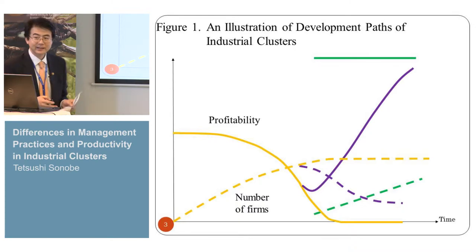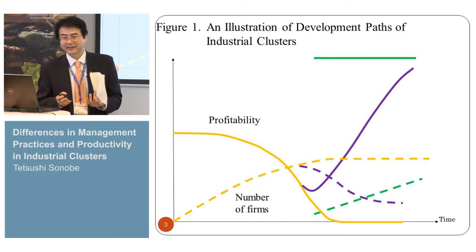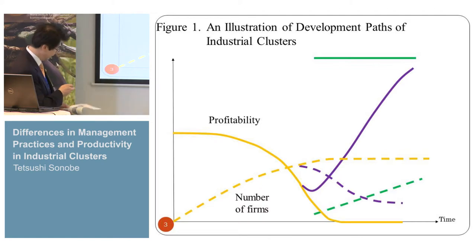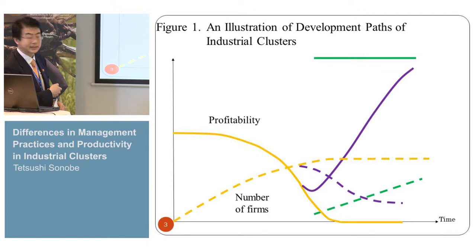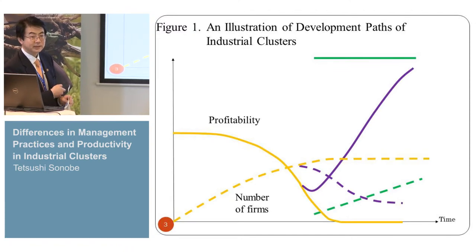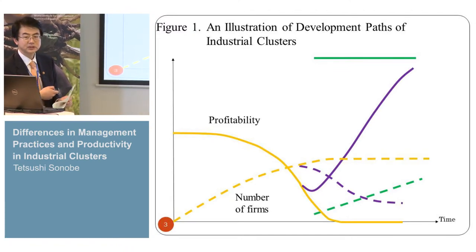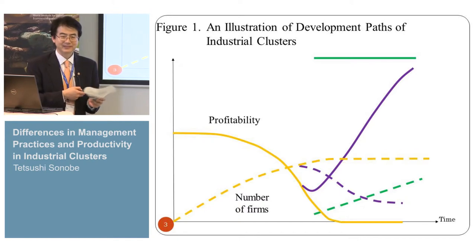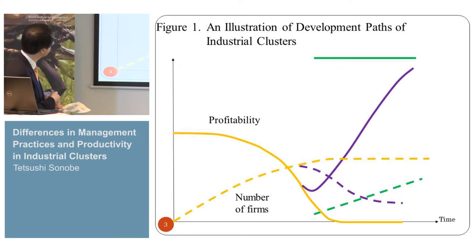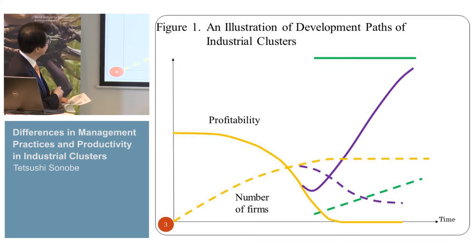Initially, it is difficult to get the appropriate material and difficult to find customers. If the pioneer overcomes those difficulties, then profitability is very high — because although the quality of the product is very low, there are a lot of consumers happy to buy the product at a low price compared with imported products. And initially, no competitors, so profitability is high.